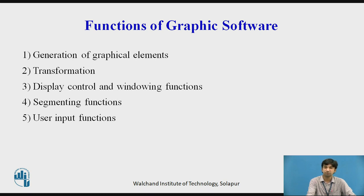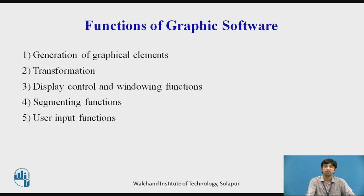For 3D, the term primitive is mainly used for three-dimensional elements like sphere, cube, prism, pyramid, cylinder, etc. The second functional group is transformation, which mainly consists of editing or changing a given geometrical element, drawing, or image displayed on the screen. Transformations are used to construct or develop application models. They mainly include scaling — enlargement or reduction of an element — translation, which is repositioning of an image, and rotation, which provides an angle to the image.